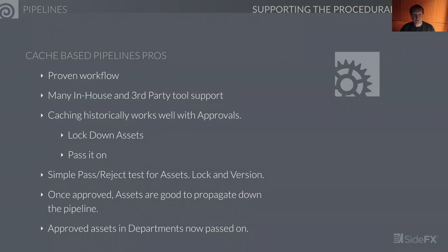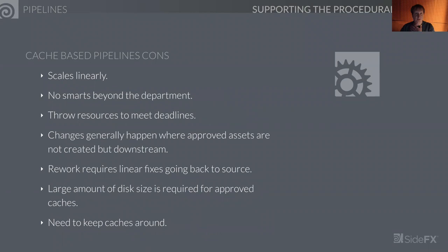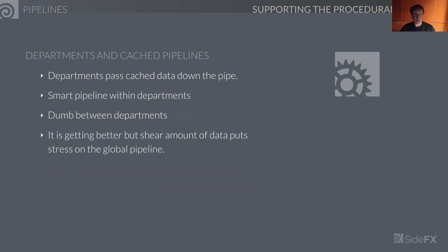Once assets are approved, they're good to propagate down the pipeline. The cons: it scales linearly. No smarts beyond the current department — even if the department itself is procedural, the cache data formats have no procedural smarts. Generally it's Alembic, VDB, or some other format. You throw resources to meet deadlines, and rework is a big problem. If proceduralism is stuck in the department, reworking still has to be done there. The large amount of disk space required to hold approved caches is growing exponentially.